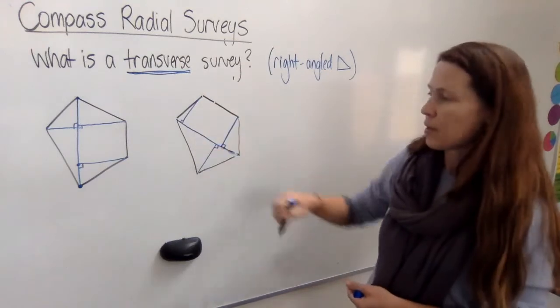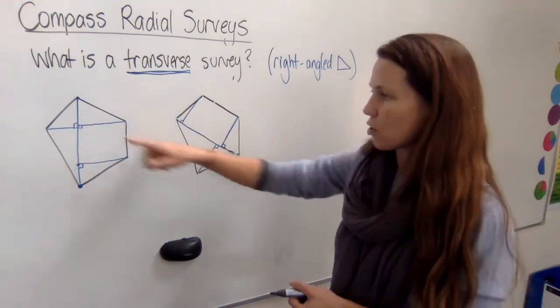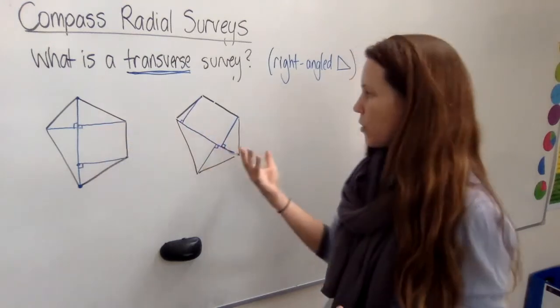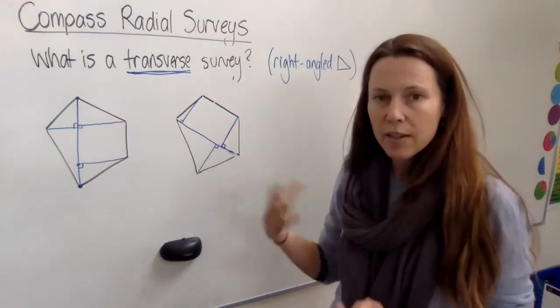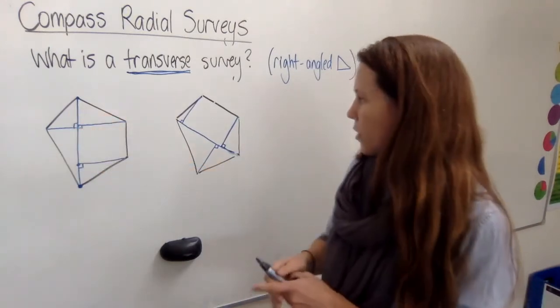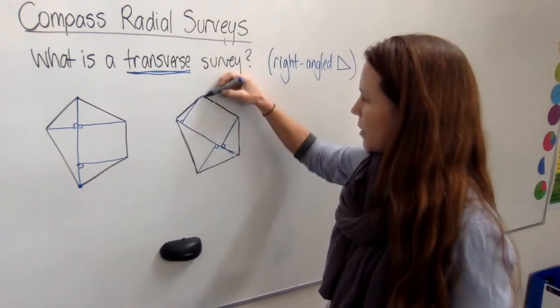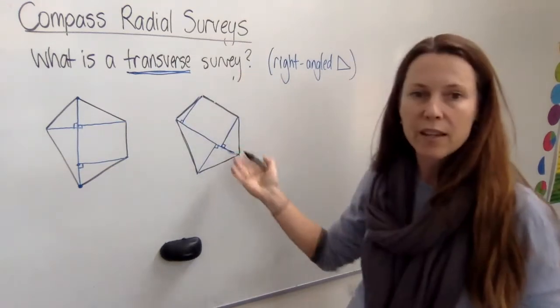Now this method here will give you completely different triangles from this one, but the point is when you add up the areas of these triangles they should still come to the same total area as these shapes. Or if you are using it to find the total perimeter, the length around the edge of the property, you should get the same answer either way.